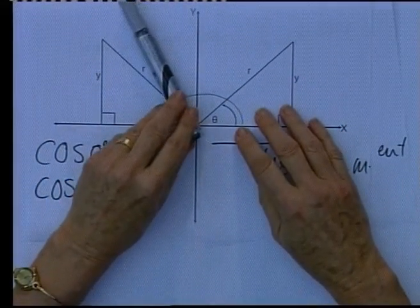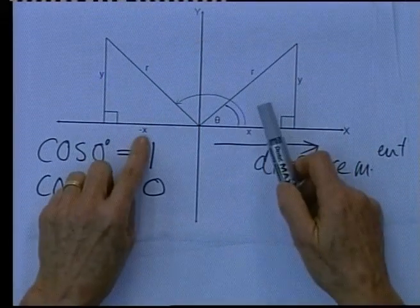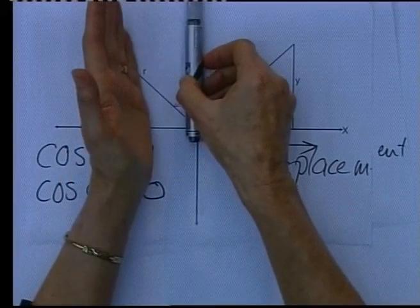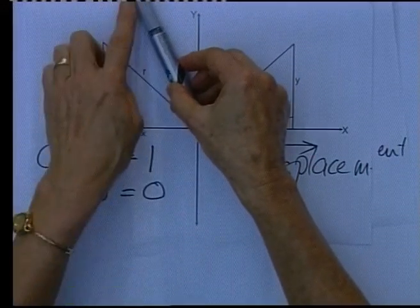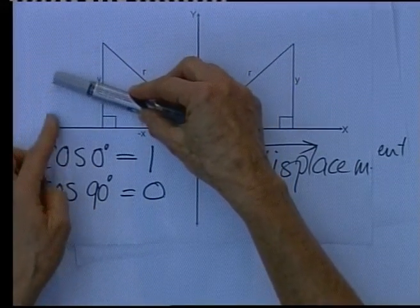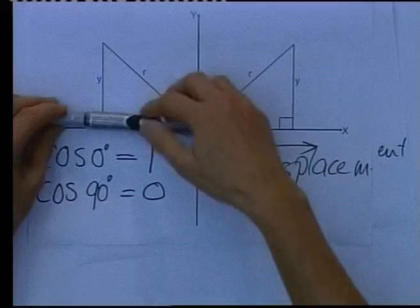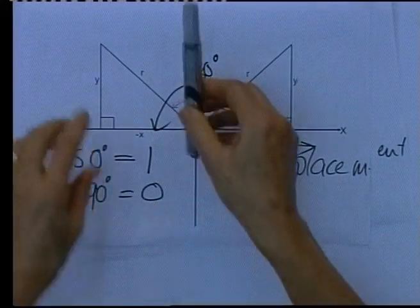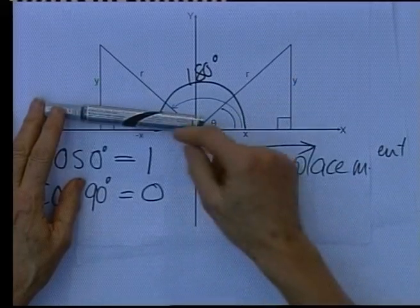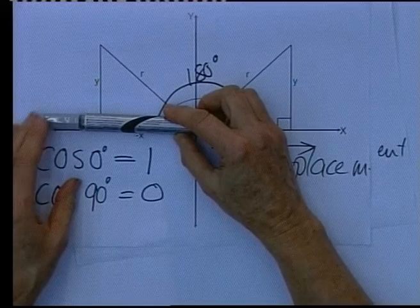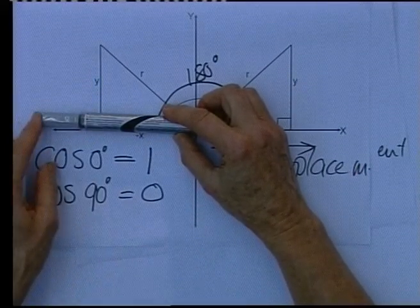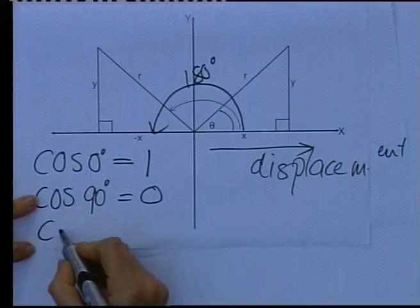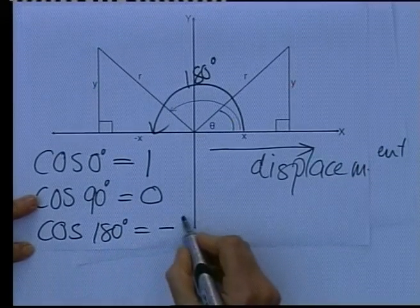As the force goes into the second quadrant, we work with negative x values. As it goes from 90 degrees, the x value increases in magnitude until the angle is 180 degrees. At that point, minus x and r are equal in magnitude, so cos 180 is x divided by minus x, which gives minus 1. So cos 180 degrees equals minus 1.